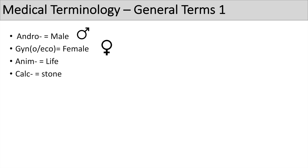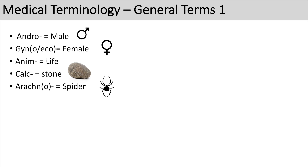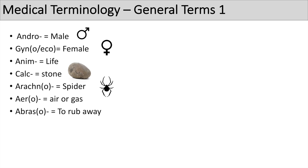The next prefix is 'calc', which means stone — you can think of renal calculi, or kidney stones. The next prefix is 'arachno', which means spider — think of arachnophobia, a fear of spiders. The next prefix is 'aer' or 'aero', which means air or gas — think of aerodynamic. The next prefix is 'abras' or 'abraso', which means to rub away — think of the word abrasion.